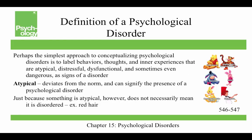Perhaps the simplest approach to conceptualizing psychological disorders is to label behaviors, thoughts, and inner experiences that are atypical, distressful, dysfunctional, and sometimes even dangerous as signs of a disorder. Atypical means that it deviates from the norm and can signify the presence of a psychological disorder. Just because something's atypical, however, does not necessarily mean it is disordered. For example, people with red hair are only four percent of the U.S. population, but it's not a disorder — it's just atypical.